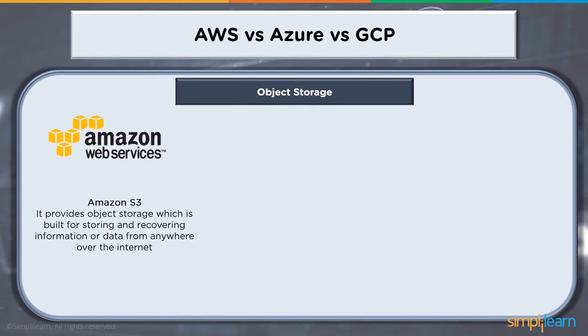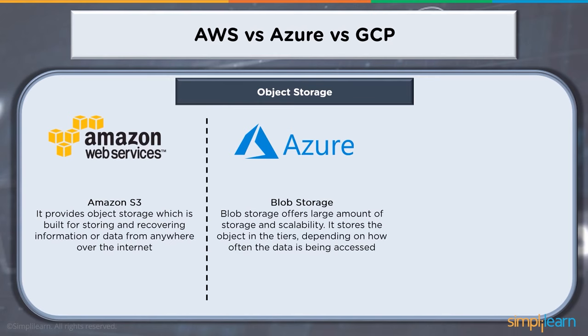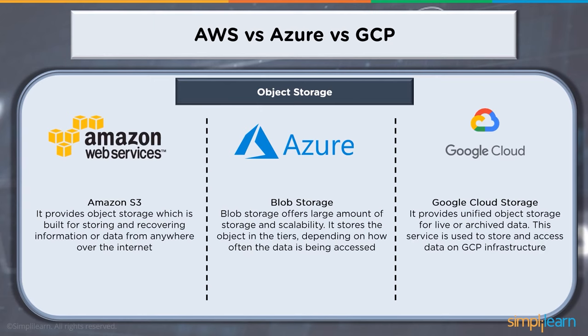When we talk about object storage: Amazon has Simple Storage Service, S3, which provides object storage built for storing and recovering information from anywhere over the internet. Azure comes with Blob Storage — binary large objects — offering large amounts of storage and scalability. It stores objects in tiers depending on how often data is accessed. S3 also has different storage classes — frequent access, infrequent access, or archival. Google Cloud has Cloud Storage, providing unified object storage for live or archive data, used to store and access data on GCP infrastructure.